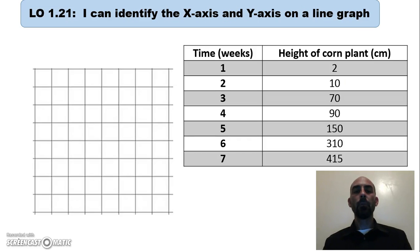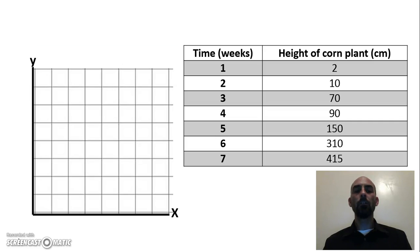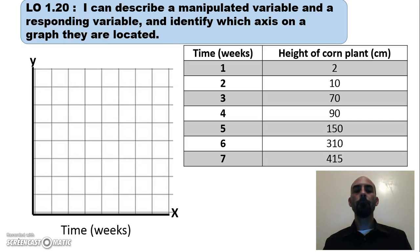Let's review by looking at this graph. The x-axis goes side to side and the y-axis goes up and down. Looking at the corn plant data, the manipulated variable was time — the variable that was changed — so that goes on the x-axis. In response, the height of the corn plant changed, so the responding variable goes on the y-axis.